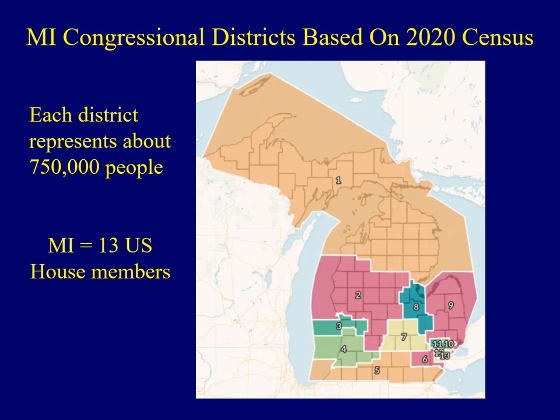I'd like to jump ahead and look at some current events. Every 10 years we have a census, and based upon the 2020 census, Michigan has 13 members of the United States House of Representatives. On the right, you see a map that identifies the 13 different districts. Each district these days represents about 750,000 people. Michigan is one of the larger states, but kind of in the top tier, not the largest among others. This is the map that identifies the current congressional districts for the state of Michigan.